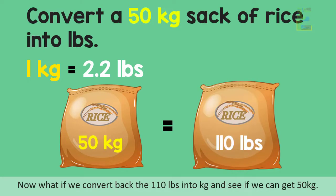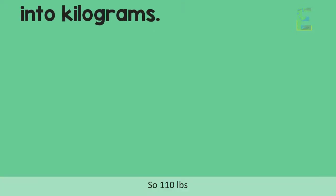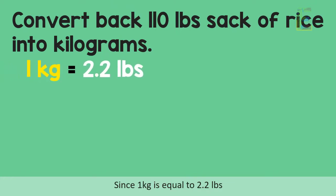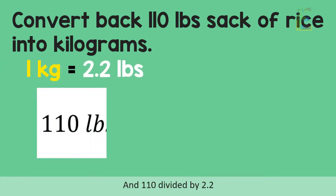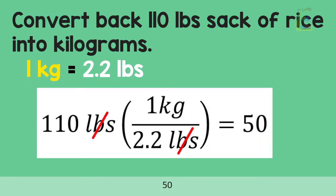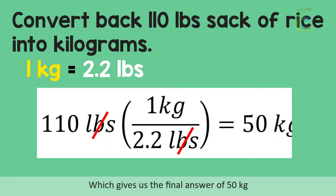Now, what if we convert back the 110 pounds into kilograms and see if we can get 50 kilograms? So, 110 pounds — we need to divide this by 2.2, since 1 kilogram is equal to 2.2 pounds. And 110 divided by 2.2 gives us 50, which gives us the final answer of 50 kilograms.